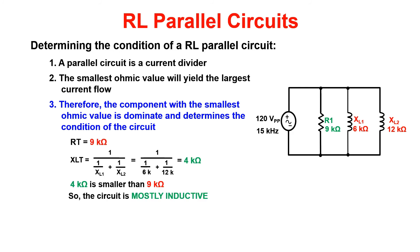Here we see that our resistance total is 9k ohms and that our inductive reactance or XL is 4k ohms. Don't forget to use the reciprocal formula when getting XLT. Therefore we could call this circuit mostly inductive.